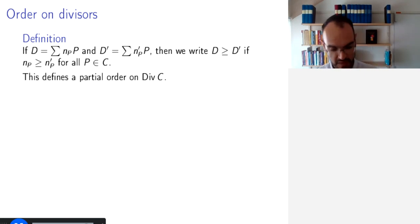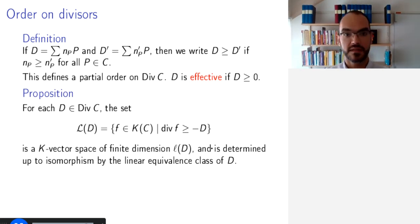Finally, we can put an order on divisors. So, if a divisor D is the sum of NP times P, and another divisor D' is the sum of NP prime times P, then we say that D is greater than or equal to D' precisely when all these orders are superior in D to those in D'. This defines a partial order on the divisor group. And we call the divisor effective if all NP are positive or zero.